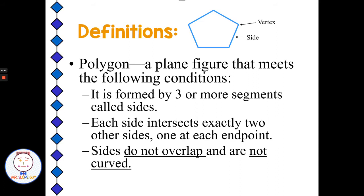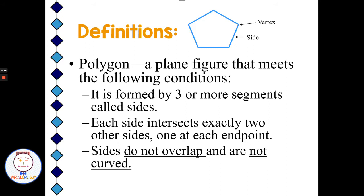The sides don't overlap and none of the sides are curved. So it meets those three conditions: three or more sides, each side meets exactly one endpoint, and they don't overlap and are not curved. If it meets those conditions, we say we have a polygon.